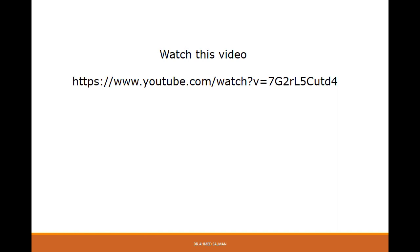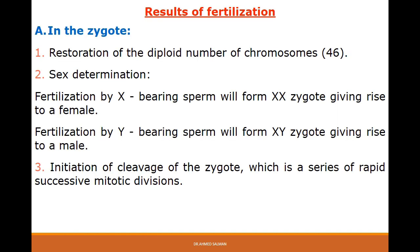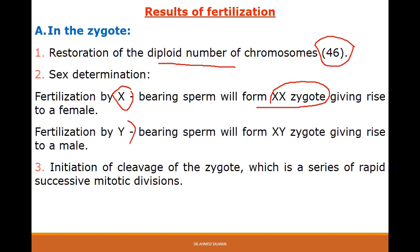The results of fertilization: formation of the zygote. The zygote has a diploid number of chromosomes — 46 — because it results from the fusion of the sperm, which has 23 chromosomes, and the ovum, which has 23 chromosomes. Sex determination: if an X-bearing sperm fertilizes the ovum, the result is an XX zygote, giving rise to a female. If a Y-bearing sperm fertilizes the ovum, the result is an XY zygote, giving rise to a male.